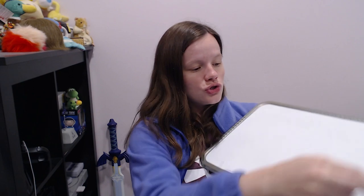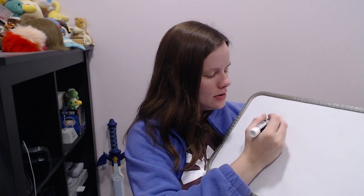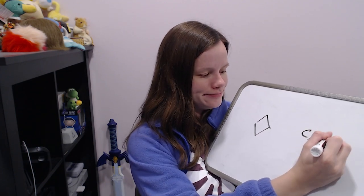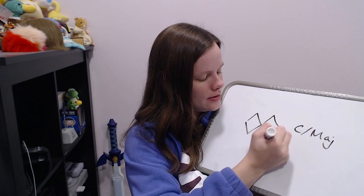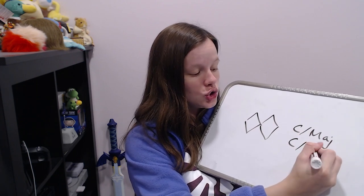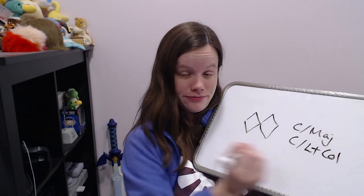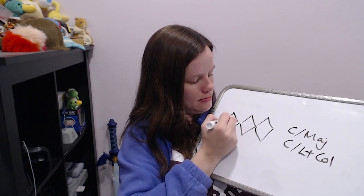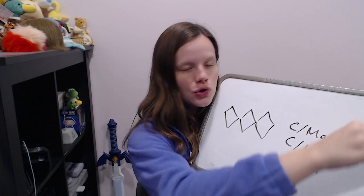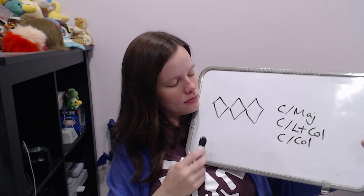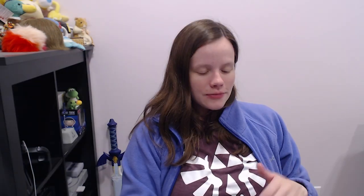Then we move on to additional officer insignia — the diamonds. One diamond is cadet major. Two diamonds is cadet lieutenant colonel. Three diamonds is cadet colonel. Cadet colonel is the highest you can go in the cadet program, and that's the Spaatz award. So it's pretty straightforward going through all the cadet insignia.